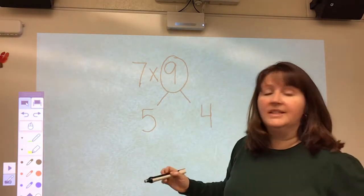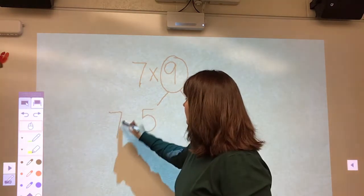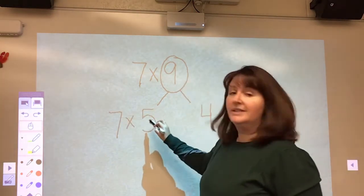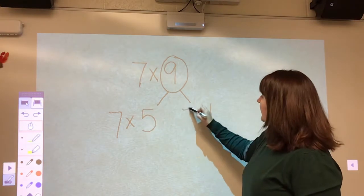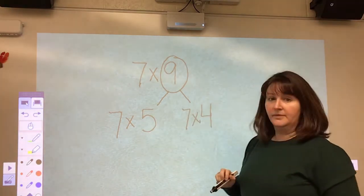Now, the part that we left the same is the 7. So I'm going to take this 7 and 7 times 5 and now 7 times 4.